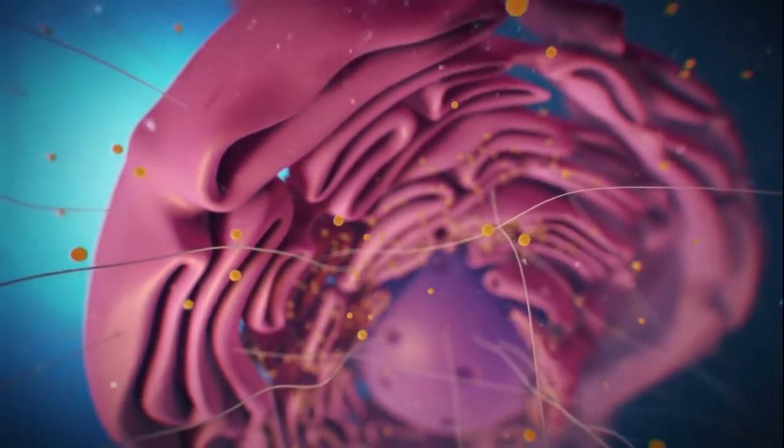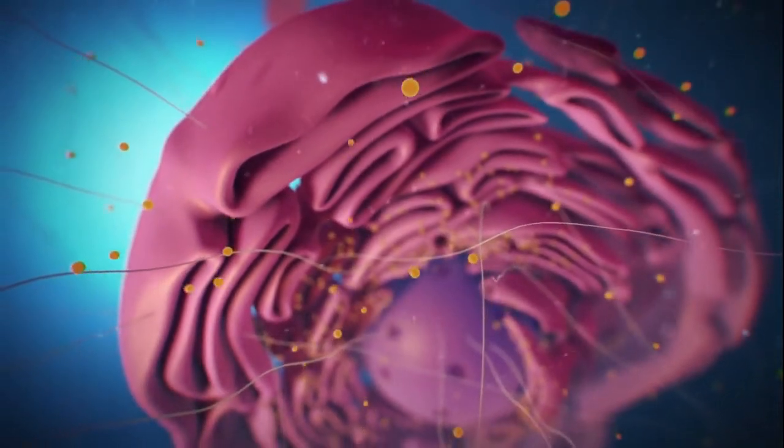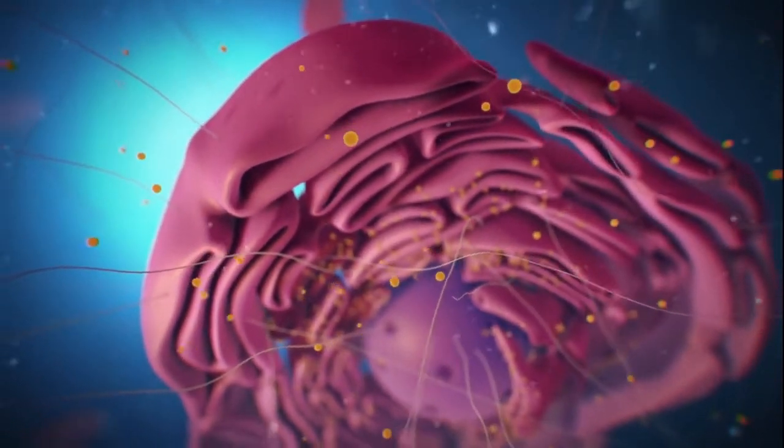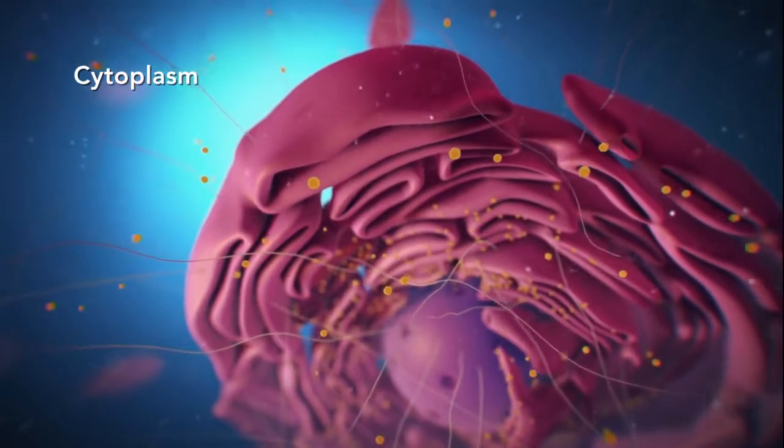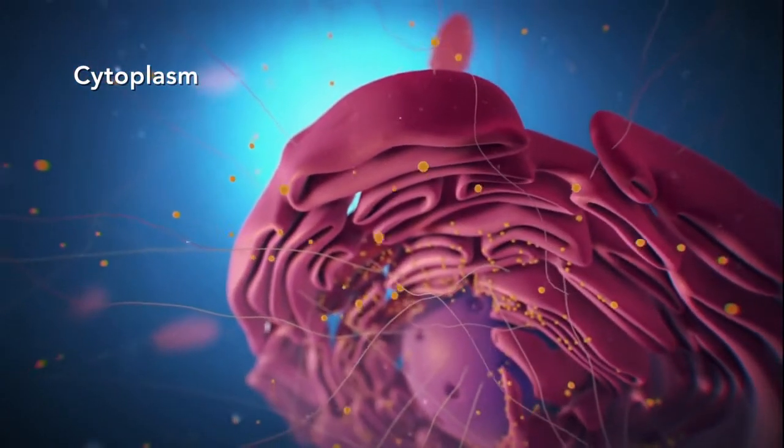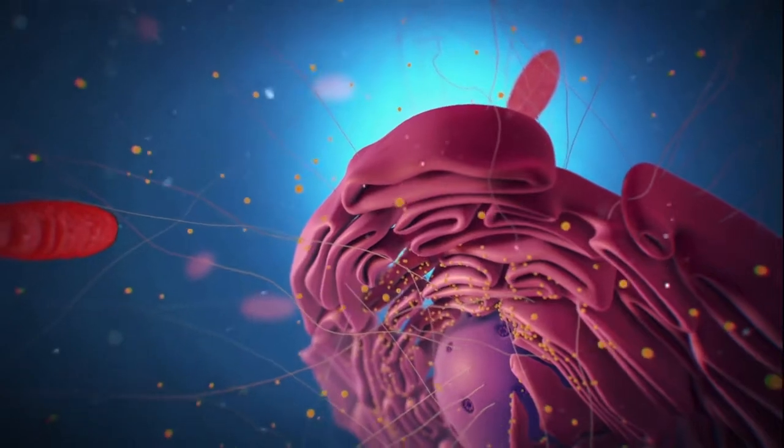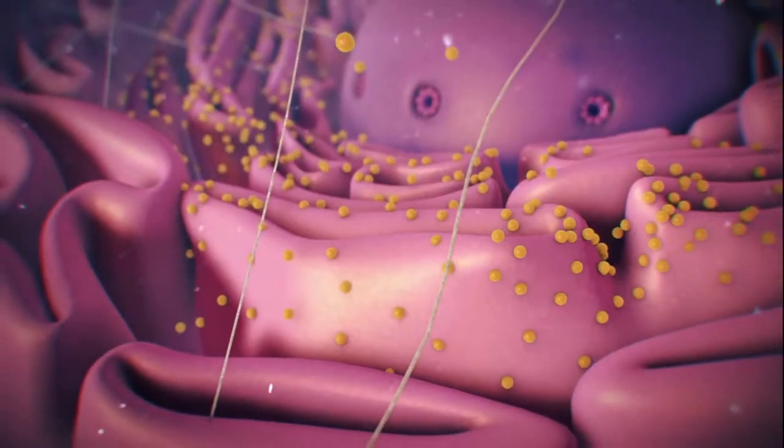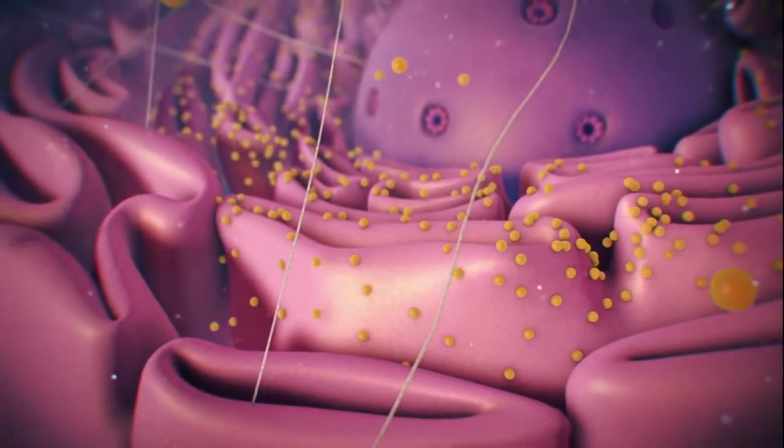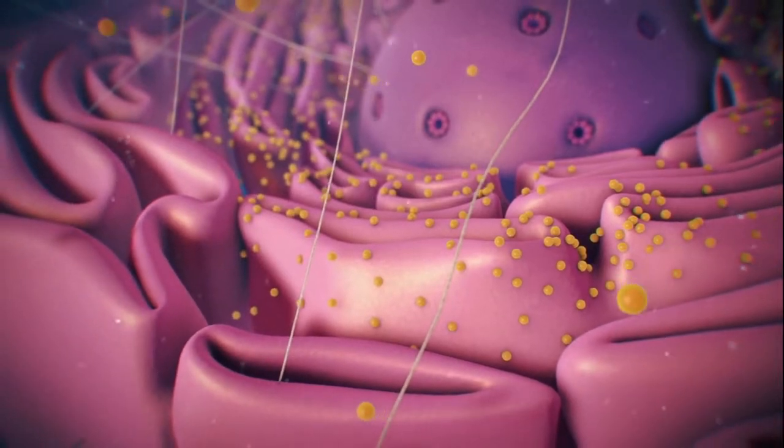Outside the nucleus, the ribosomes and the rest of the organelles float around in cytoplasm, which is the jelly-like substance. Ribosomes may wander freely within the cytoplasm or attach to the endoplasmic reticulum, sometimes abbreviated as ER.